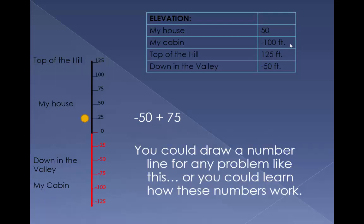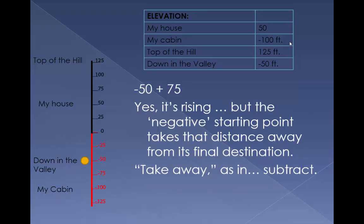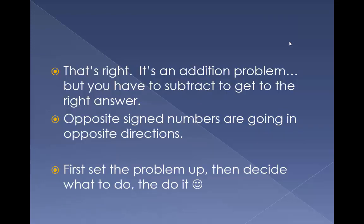You could draw a number line for any problem like this, or you could learn how these numbers work. Negative 50 plus 75 — yes, it's rising, but that negative starting point takes that distance away from its final destination. It's got to go 50 just to get back up to zero — take away, as in subtract. That's right: it's an addition problem, but you have to subtract to get the right answer. Opposite sign numbers are going in opposite directions. First set the problem up, then decide what to do, then do it.